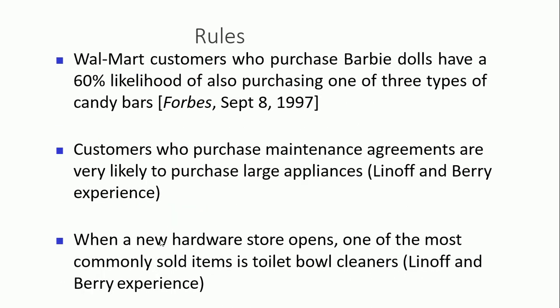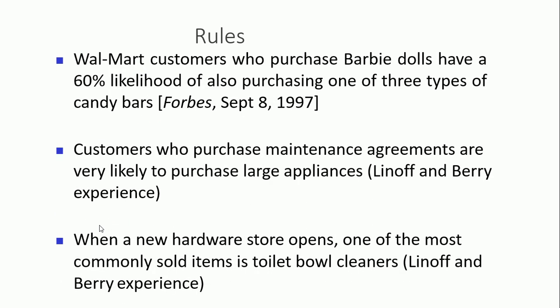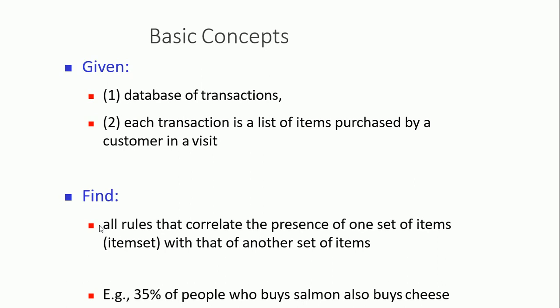The most useful type is actionable rules. For example: customers who purchase a Barbie doll have a 50% likelihood of also purchasing one of three types of candy bars. Another actionable rule: customers who purchase a garden hose are very likely to purchase larger plants. This distributes information the store wants to know. In hardware stores, commonly sold products can be linked this way — and this can be very profitable.